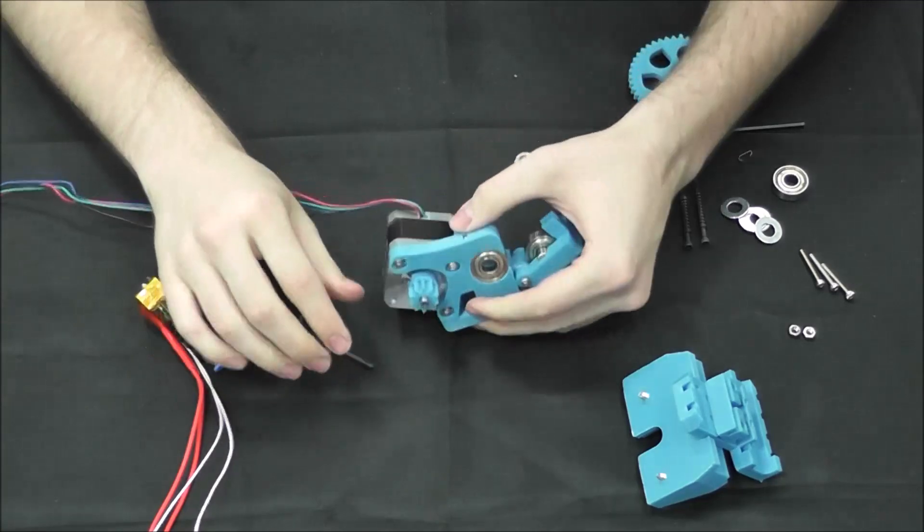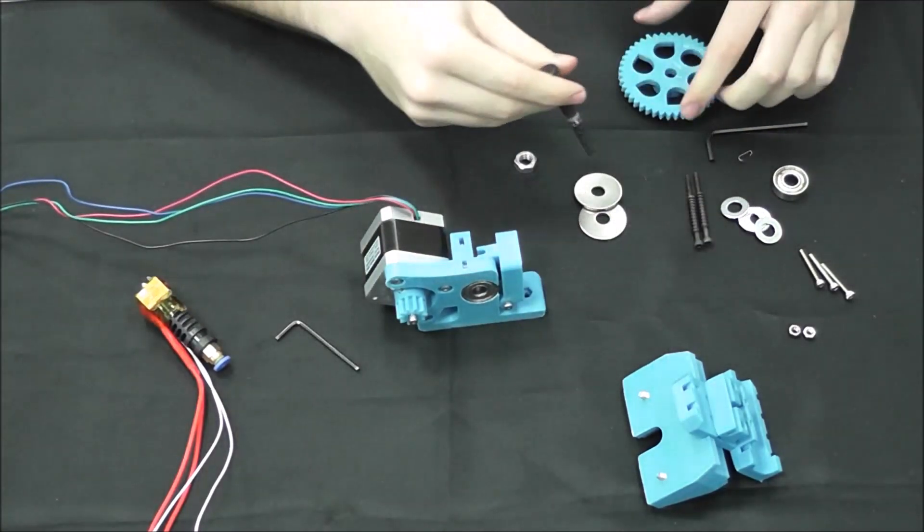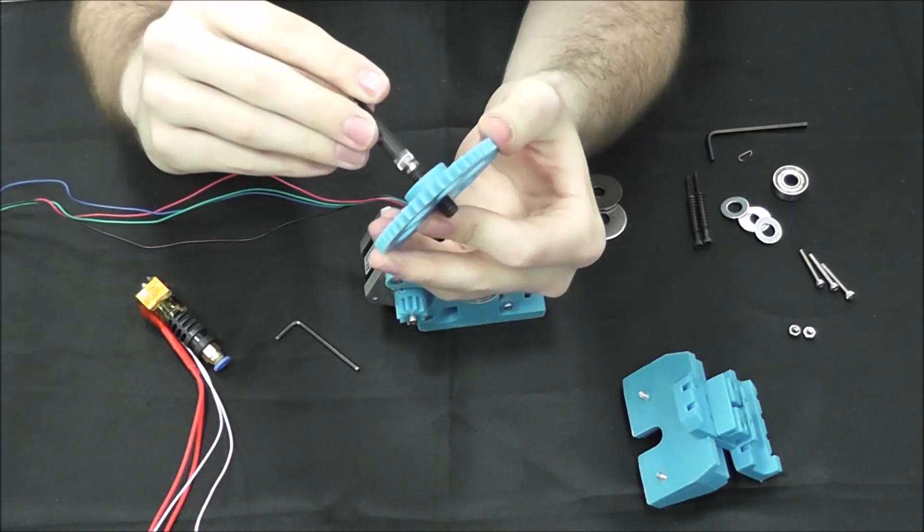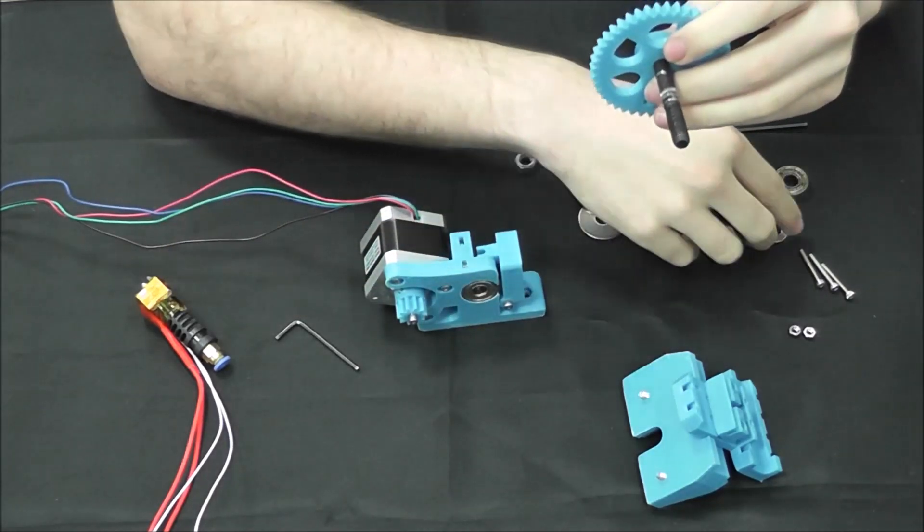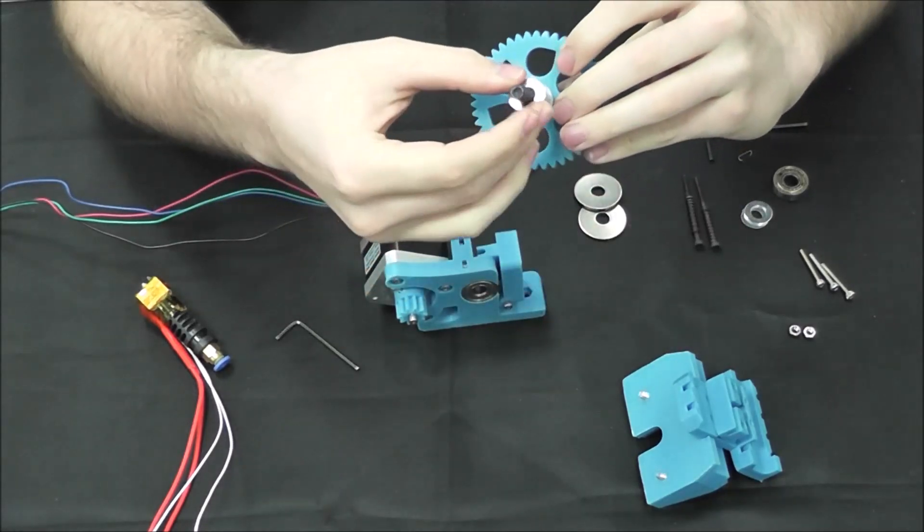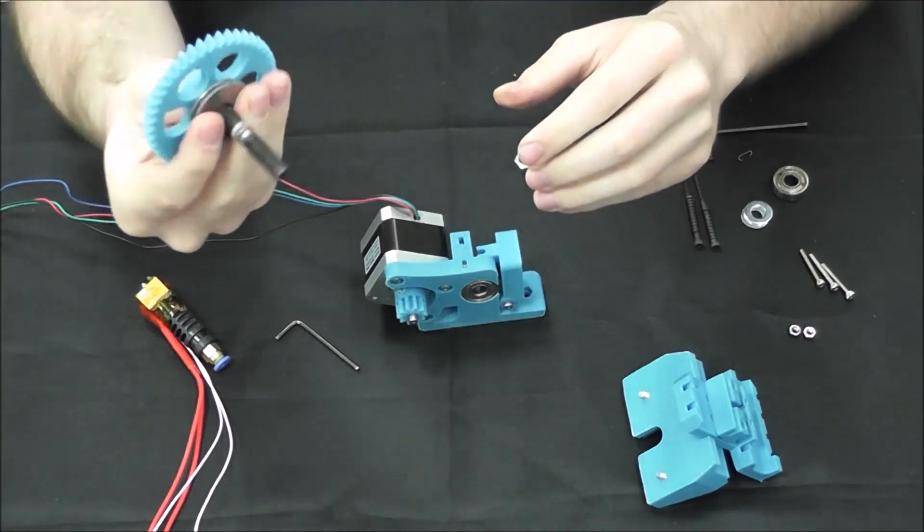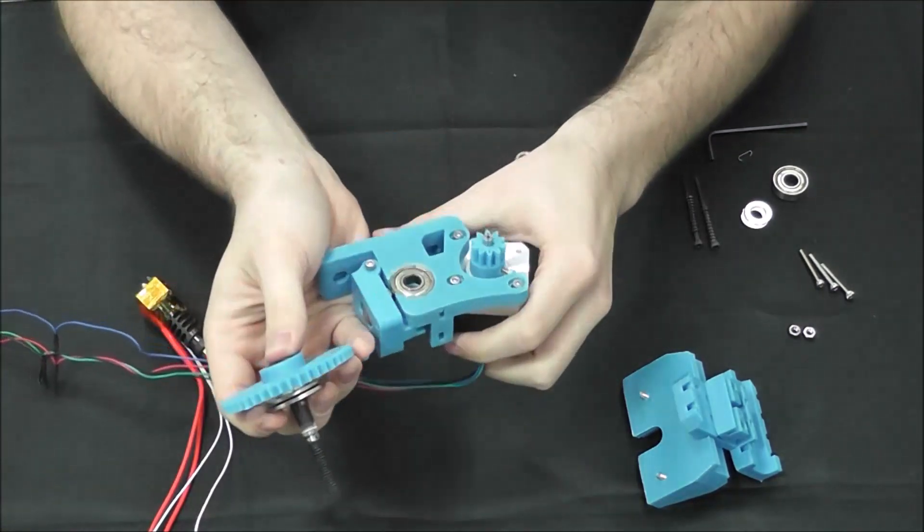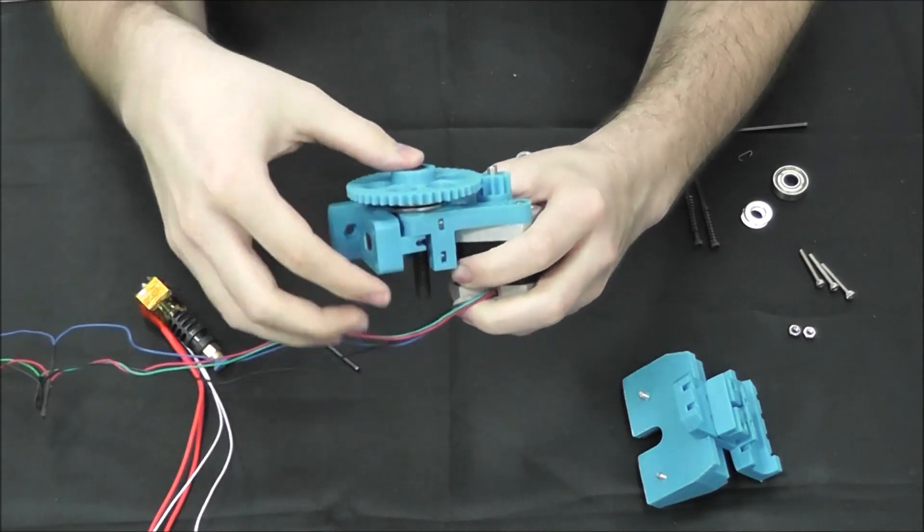Okay, now we're going to attach our large gear. We'll do this by sliding the hob bolt through the hexagonal indent on the large gear, then sliding three M8 washers and two M8 fender washers over the hob bolt, fitting the gear on the backside of the assembly through the bearing so that it lines up with the small gear.